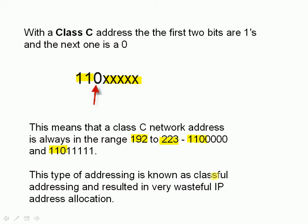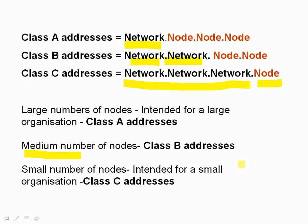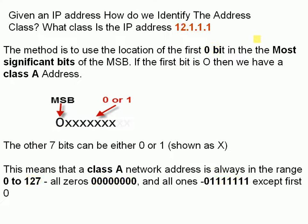This type of addressing is known as classful IP addressing. It actually resulted in very wasteful IP address allocation. Going back to a class A address, the number of nodes available is enormous — no network is going to be that large. So even though you allocated an organization a class A IP address, it still needed to do something to actually use that address, and that something was subnetting. The network with so many nodes would be unworkable, so it had to be divided into smaller networks, which is where subnetting comes in — and that's what we'll discuss in the next video.